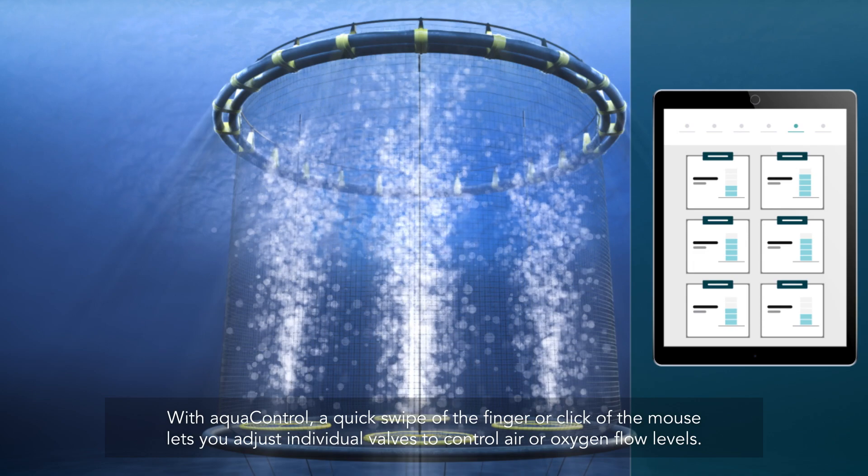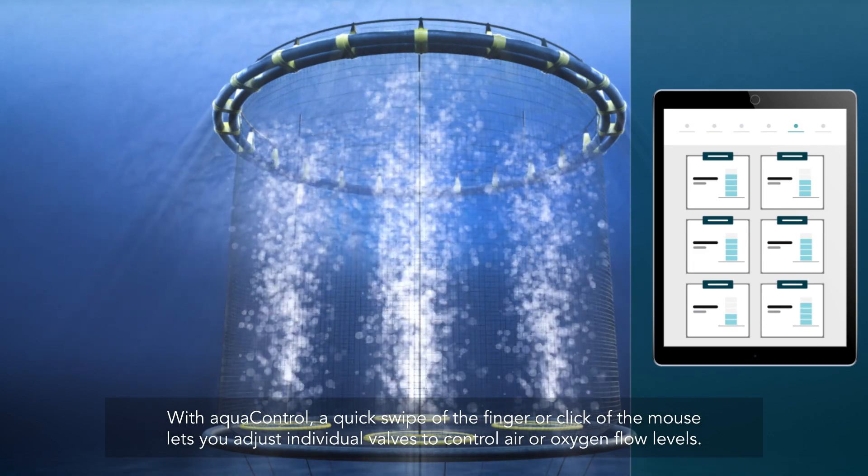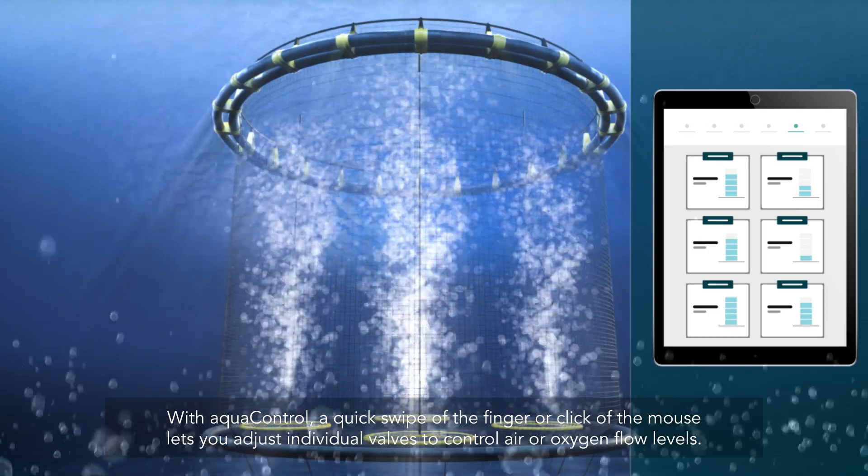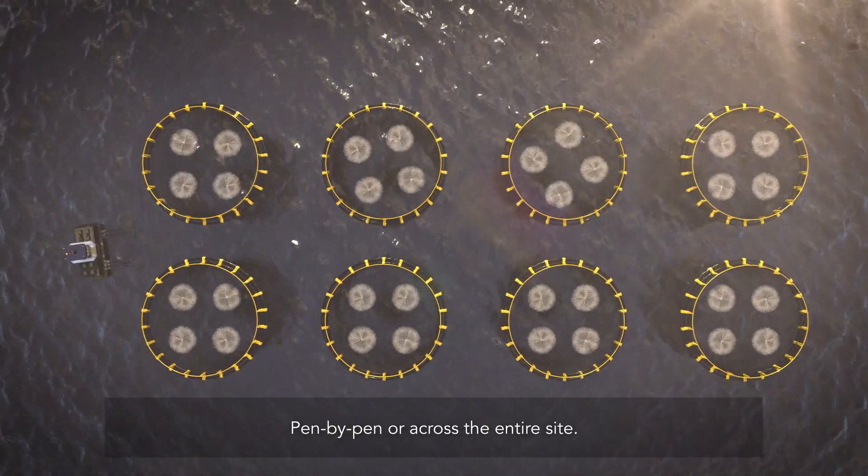With AquaControl, a quick swipe of the finger or click of the mouse lets you adjust individual valves to control air or oxygen flow levels, pen by pen, or across the entire site.